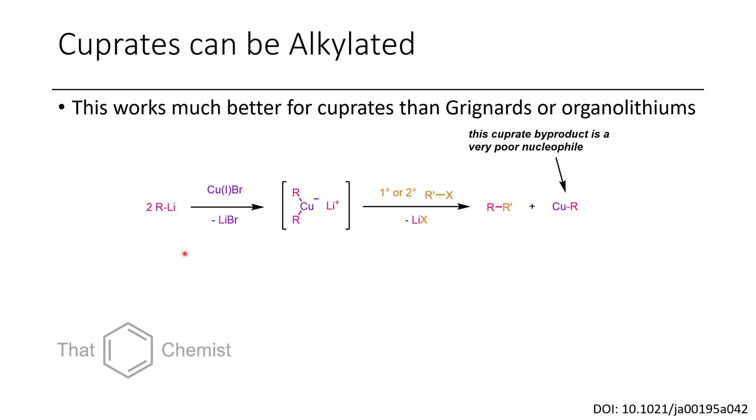So one thing you can do with a cuprate, aside from 1,4 addition, is you can alkylate an alkyl lithium. So normally if you take an alkyl lithium and you treat it with another alkyl halide, it'll just rip off the halogen. So this will just get converted to RI if you reacted it with an alkyl iodide. But what copper does is copper will let you couple this sp3 center to another sp3 center. So here you can see this R group forms a bond with this R prime halide. So this kicks out lithium halide as a byproduct and it lets you form a new carbon-carbon bond. So this is a really useful reaction to have in your back pocket, especially for retrosynthesis.